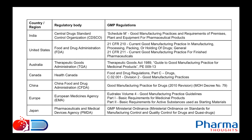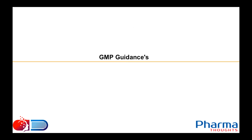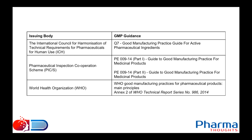Regarding GMP guidance documents, the key issuing bodies include: the International Council for Harmonisation of Technical Requirements for Pharmaceuticals for Human Use (ICH), which issues the ICH Q7 — the Good Manufacturing Practice Guide for Active Pharmaceutical Ingredients; the PIC/S (Pharmaceutical Inspection Co-operation Scheme), which issues PE009-14 Parts 1 and 2; and the WHO (World Health Organization), which issues Technical Report Series 986 as a GMP guidance document.